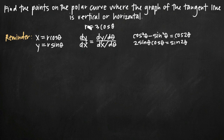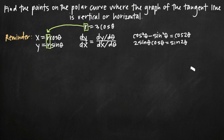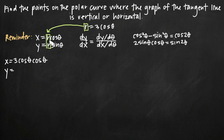The way we're going to do it is first by converting this curve from a polar curve to a Cartesian curve. Using our conversion equations for x and y, we're going to take our value for r — defined as 3 cosine theta — and plug that into our formulas. For x we get 3 cosine theta times cosine theta, and for y we get y equals 3 cosine theta times sine of theta.